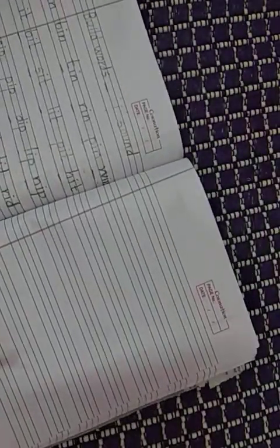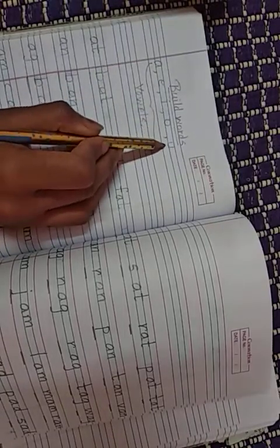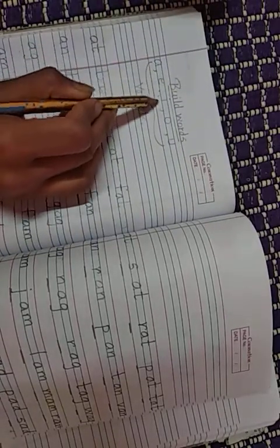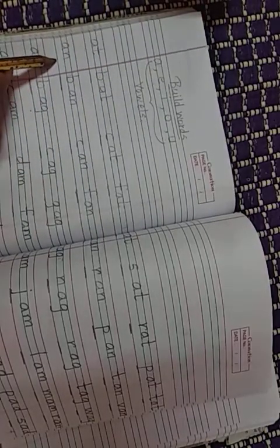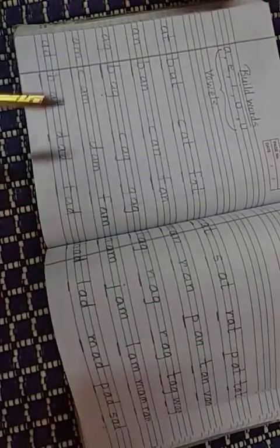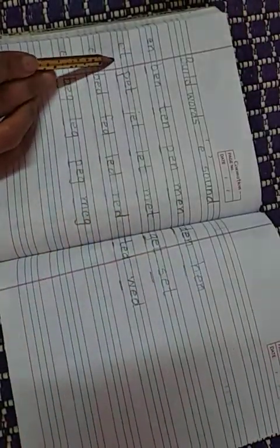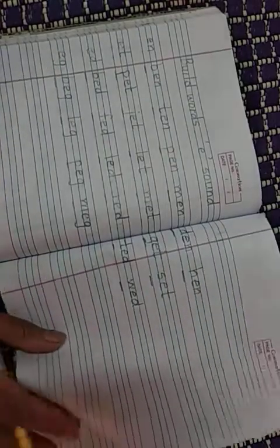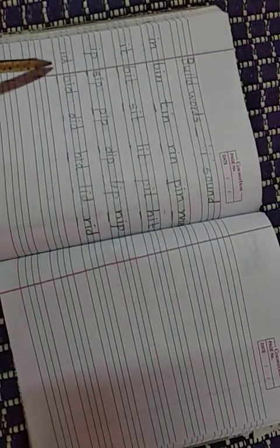Now in today's class we will see build words of O sound. Remember children there is build words A, E, I, O, U. A words we have formed ET words, AN words, AG words, AM words and AD words. Similarly for the E sound we have formed IN words, ET words, ED words and EGG words. Next goes for I sound: IN words, IT, IP, ID.